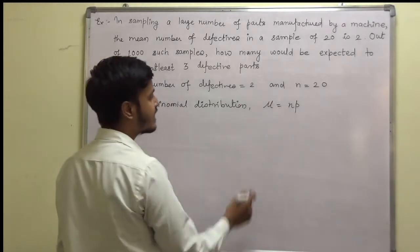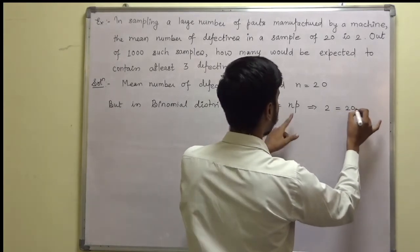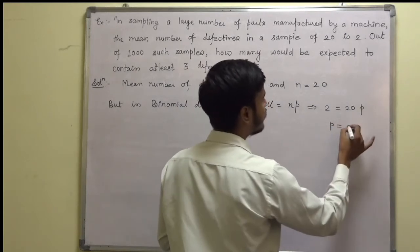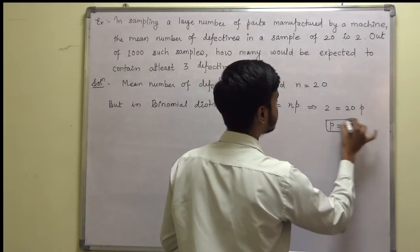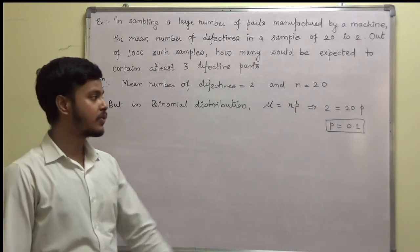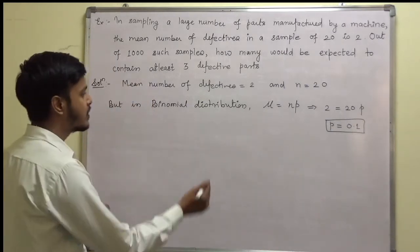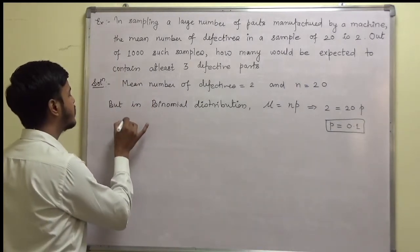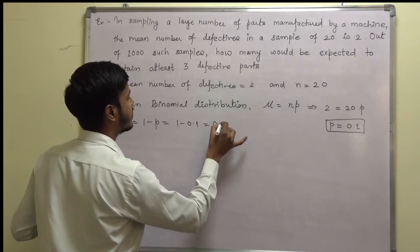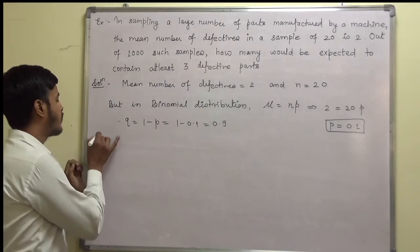Here I can substitute the values: mu as 2, n as 20, so p will be 2 by 20, which is 1 by 10, so p is equal to 0.1. And since p plus q equals 1, q is equal to 1 minus 0.1, which is 0.9.